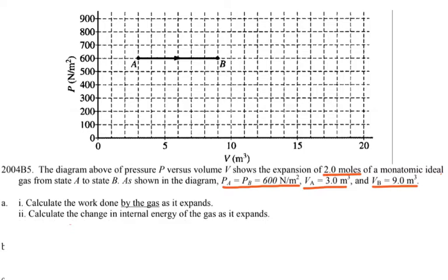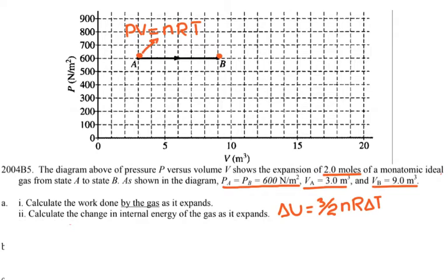For the second part, calculate the change in internal energy of the gas as it expands. The formula for change in internal energy is (3/2)NRΔt. However, I don't know how much the temperature changes from point A to point B, so I have to calculate the temperature at A and then at B using PV = NRT.